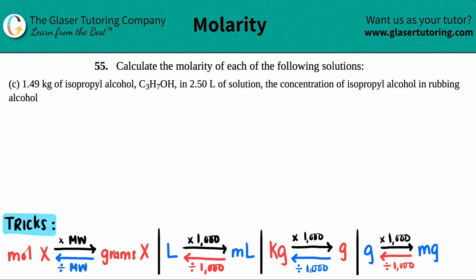Number 55: Calculate the molarity of each of the following solutions. In this example, they told us that we have 1.49 kilograms of isopropyl alcohol, which is C3H7OH, and this is all in 2.5 liter solution. The concentration of isopropyl alcohol in rubbing alcohol.